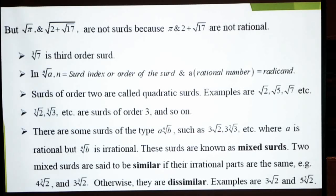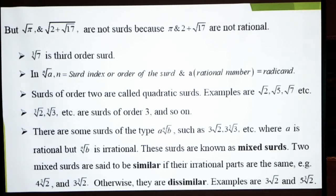There are some surds of the type a × nth root of b — such as 3 × √2، 3 × ∛3, etc. جب اس طرح آپ کے پاس آ جائے — یعنی کچھ surds ایسی بھی ہوں گے کہ یہاں پہ کوئی ایک number ہوگا اور یہاں پہ nth root of b ہوگا — جیسے 3 × √2 یا 3 × ∛3. یہ بھی surds کی مثال ہے جہاں a rational number ہے، جیسے یہاں 3 ہے۔ چونکہ √2 اور ∛3 irrational numbers ہیں، تو یہ surds ہیں — اور ان کو mixed surds کہتے ہیں۔